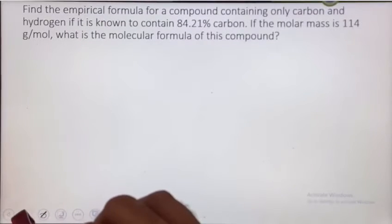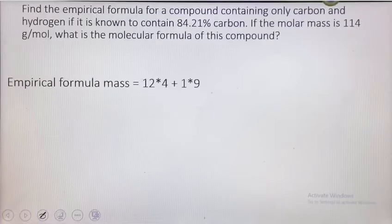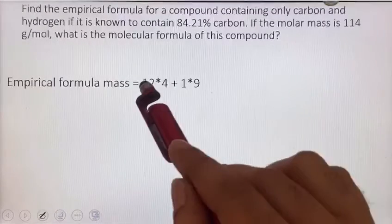I'll continue from here. The empirical formula mass is 12 times 4 plus 1 times 9. Why did I do 12 times 4? Because the empirical formula says I have 4 carbon atoms. 12 is the atomic mass of carbon, and I have 4 atoms.